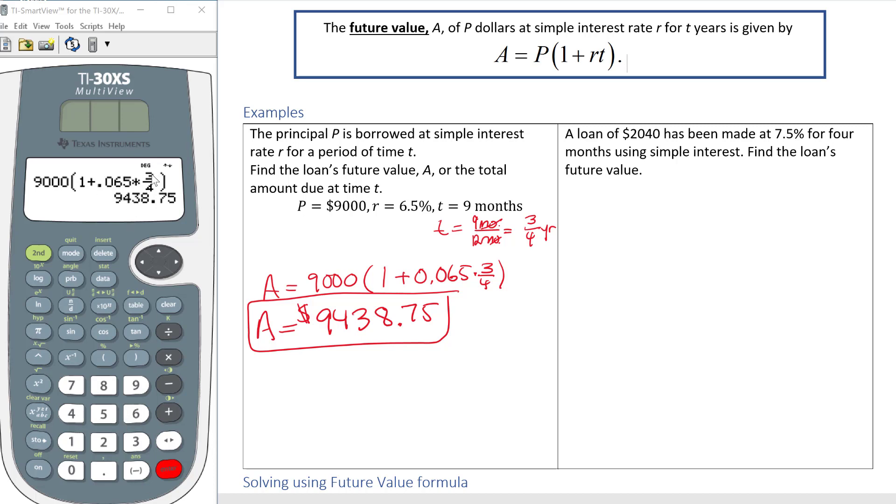Now if you don't have a fraction button like that N over D button, the way you type it in is 9,000 parenthesis 1 plus 0.065 times 3 divide by 4, because times 3 that gets you the numerator, divide by 4 that gets you the denominator, and as long as you have a calculator that you can see all of the values in, you can go ahead and hit enter and it's the same thing.